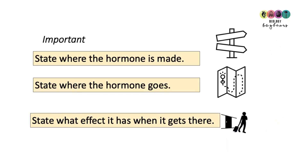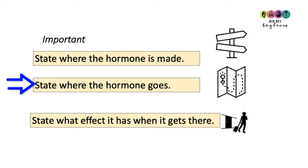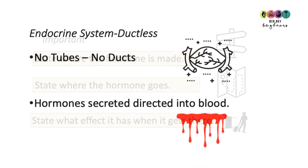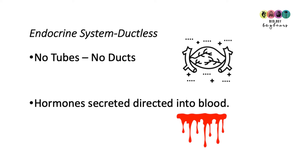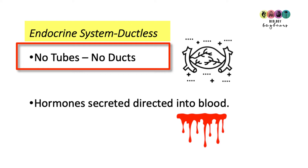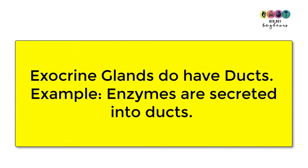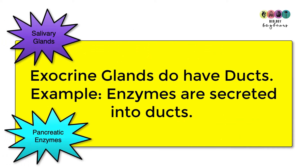When discussing hormones, it's good practice to state what gland or where the hormone is made, where it goes, and what effect it has when it gets there. This will stand you in good stead when revising the human reproductive system. The endocrine system consists of glands that produce hormones secreted directly into the blood — no tubes, no ducts. In contrast, the exocrine system is where glands secrete substances into ducts or tubes, like enzymes.